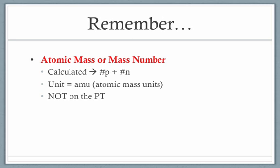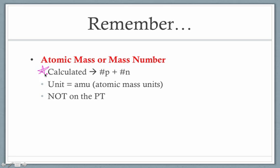Before we get too far into this topic, let's recall some information from previous videos. We've already defined atomic mass and mass number, and so far we've been using these two terms interchangeably. Atomic mass is calculated as the number of protons plus the number of neutrons, and the unit is the AMU, or atomic mass unit. One last thing to note is that this is not something you would find on the periodic table — you can only get it via that formula.